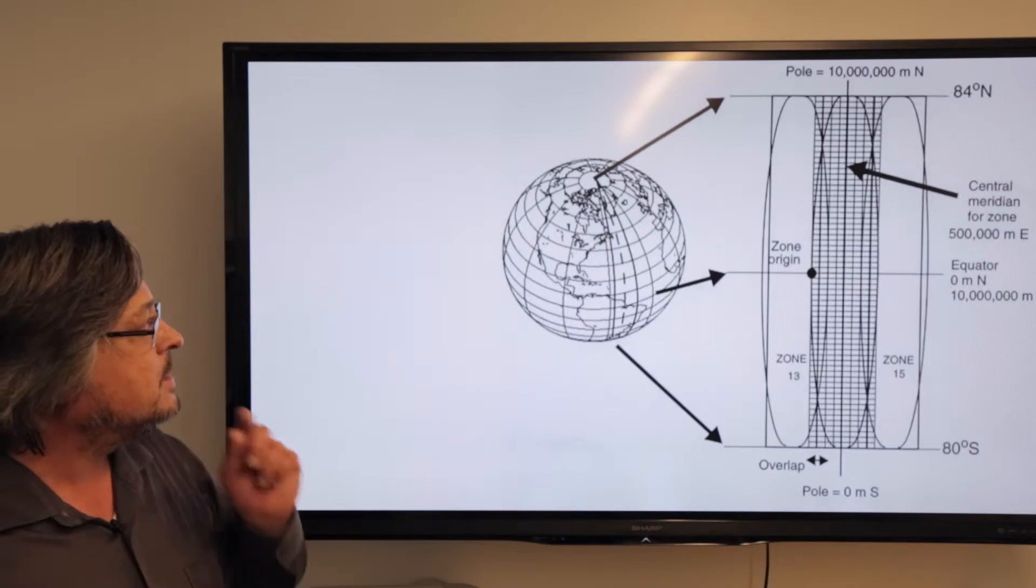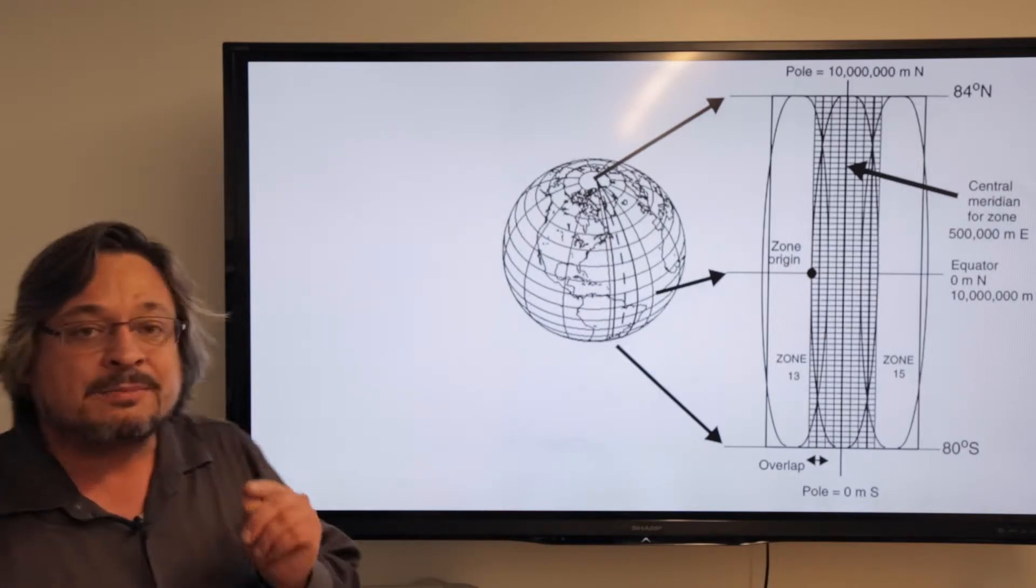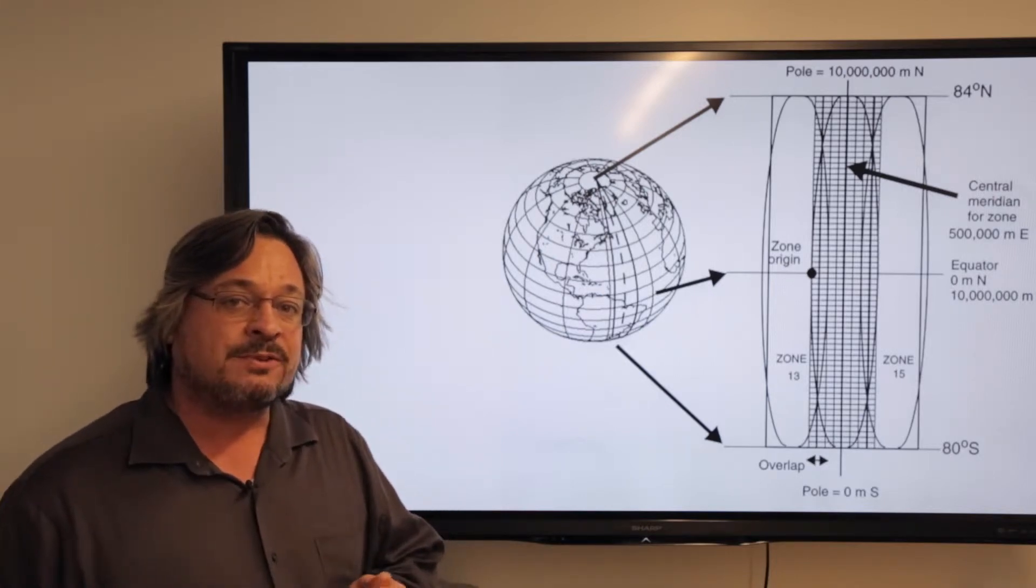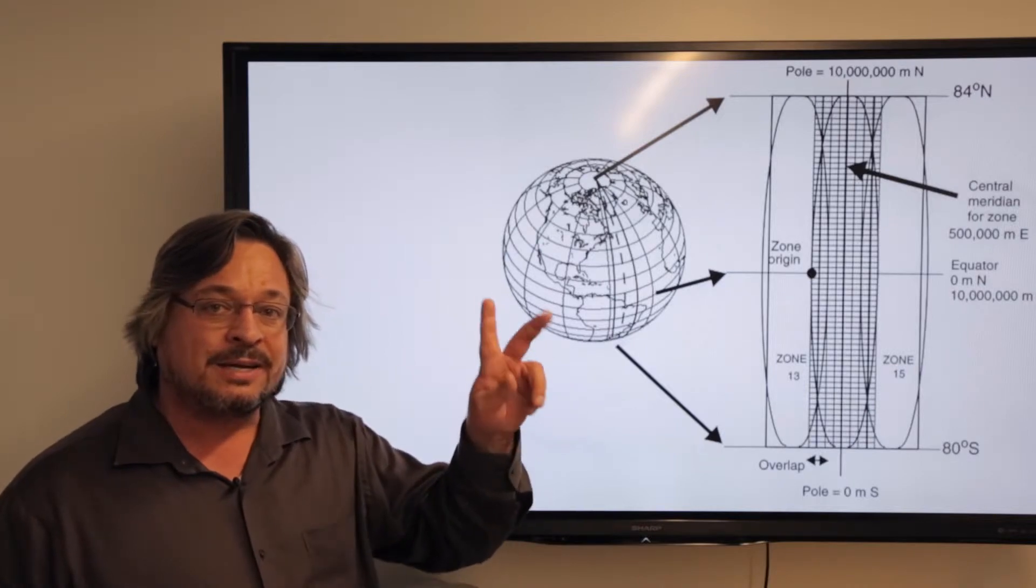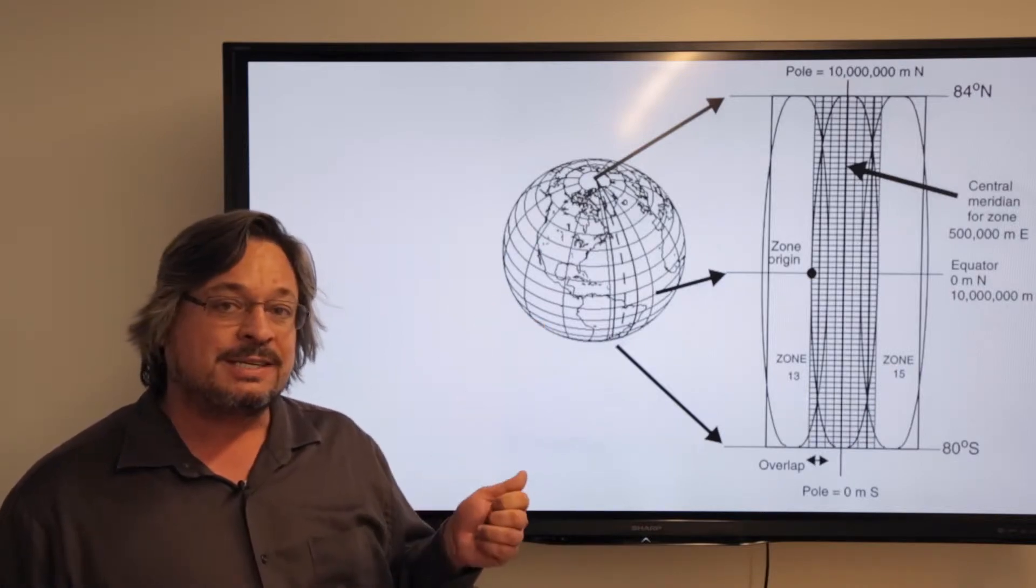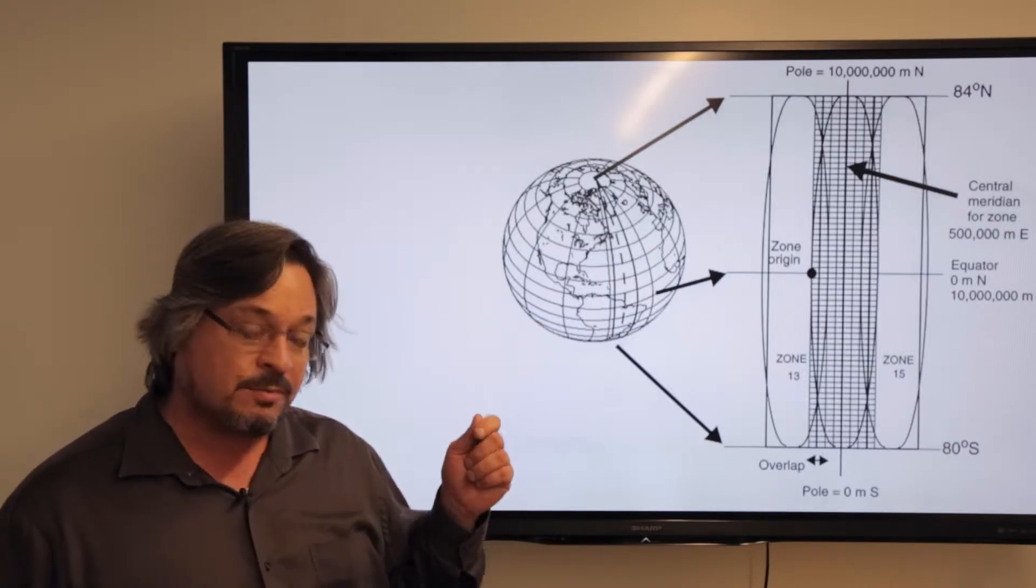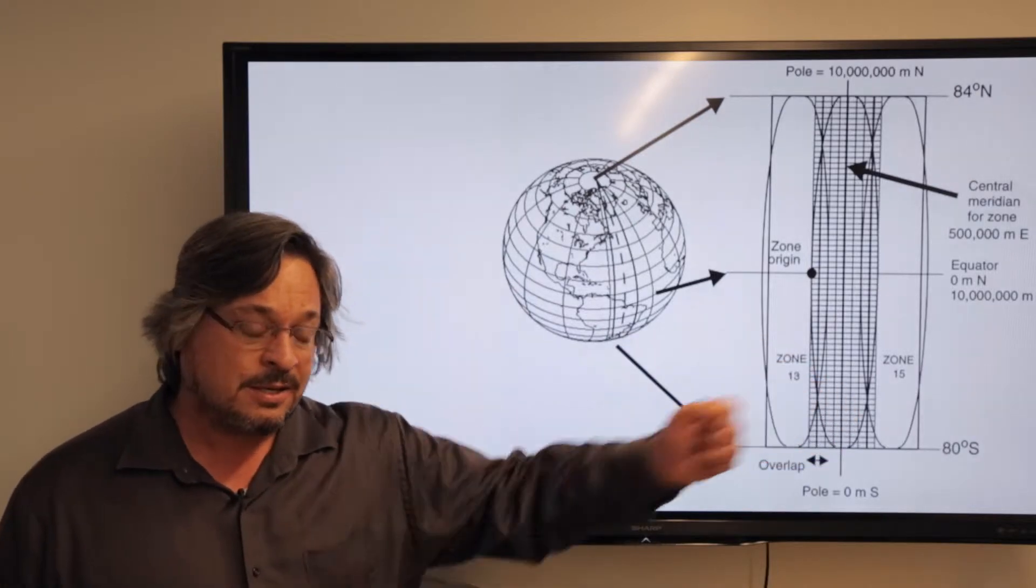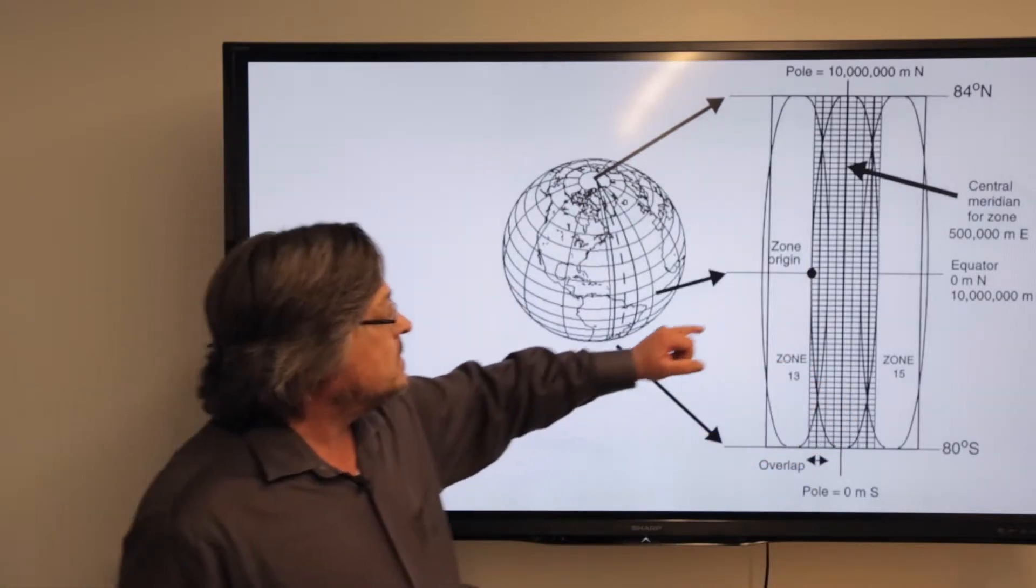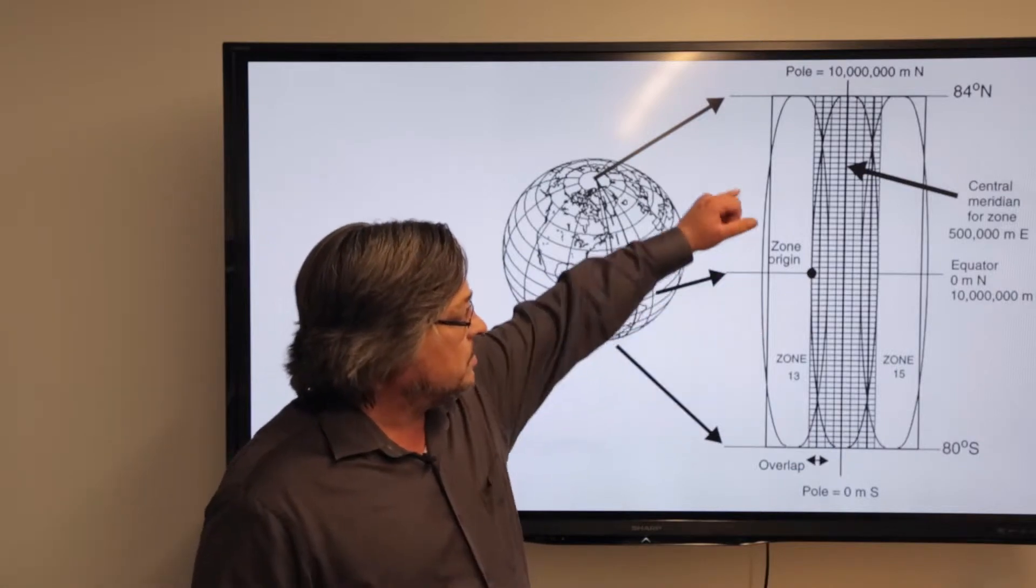The defining things with UTM system: remember with all reference systems, we first read right and then up. So we read our eastings first, which is looking at it from west to the east, numbers get larger, and our northings, which is from the south to the north.